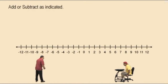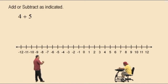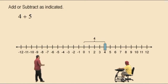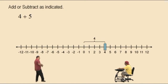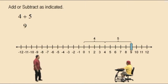Here's our number line. Add or subtract as indicated. Let's warm up with 4 plus 5. Let's enter 4 units to the right to enter the 4. Addition means move to the right, and let's add 5, so we obviously get 9 there.